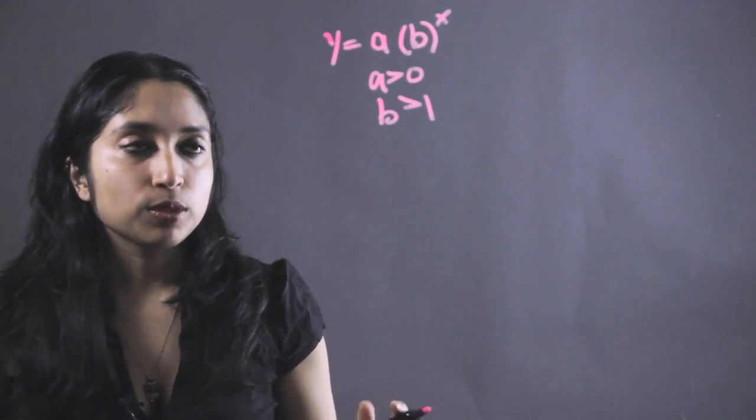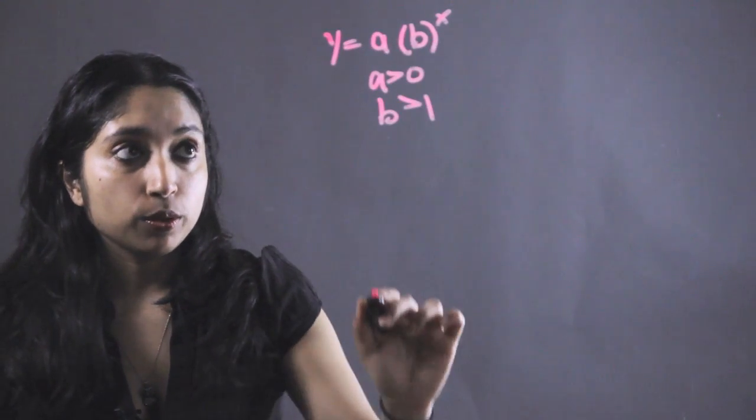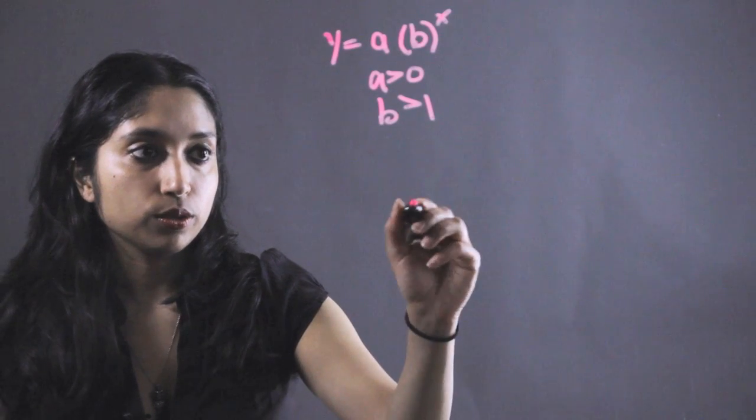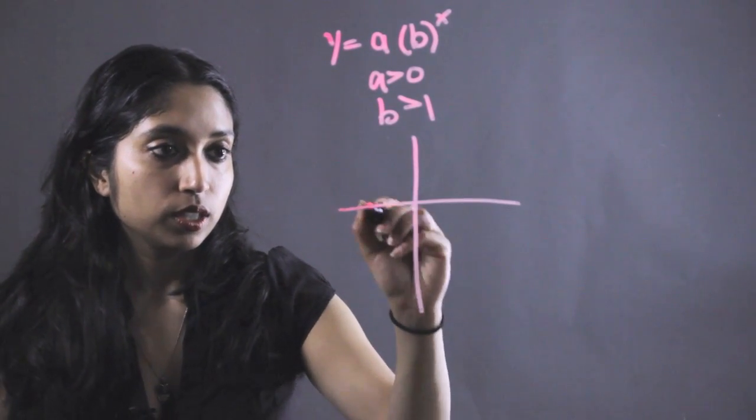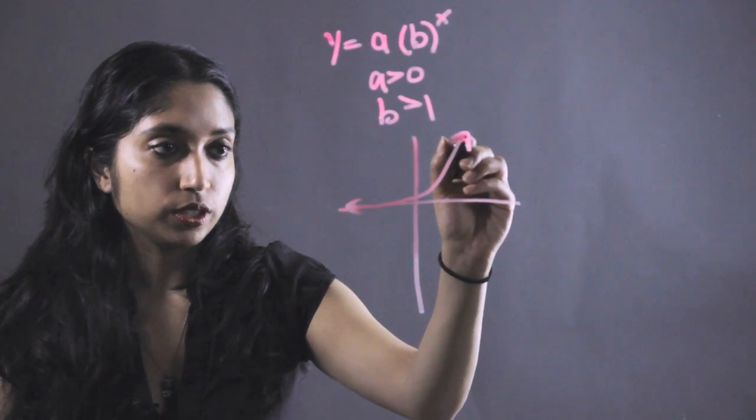To find the asymptote, an asymptote is basically the value that either Y or X approaches as they go to infinity or negative infinity. Like which value is this going to approach? So I'm just going to draw a quick graph here to help visualize. This is our exponential growth function.